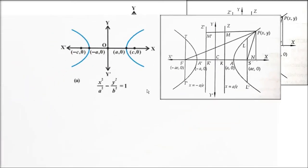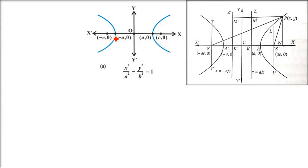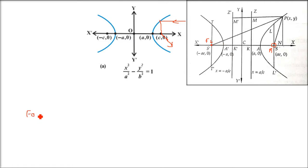I will explain why it is called conjugate later. In every hyperbola, parabola, or ellipse, there is a focus. In physics terms, whenever light from infinity is coming, it converges at the focus. There are two foci. I proved in the previous discussion that if the origin is the center, the foci are at coordinates plus-minus ae, comma zero.